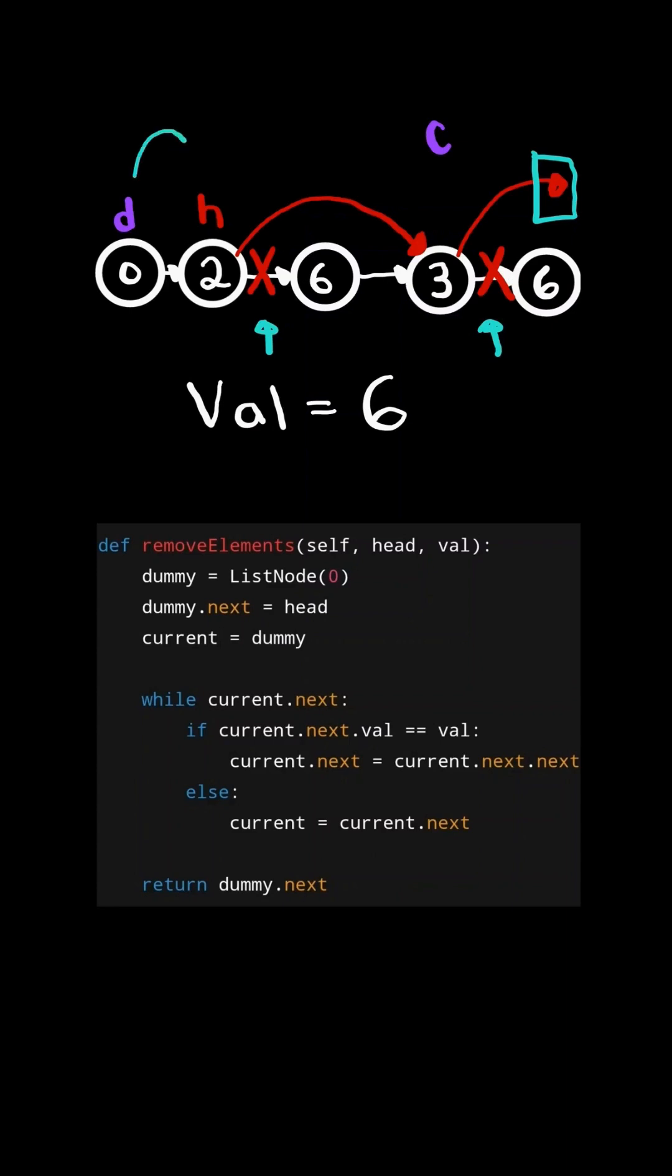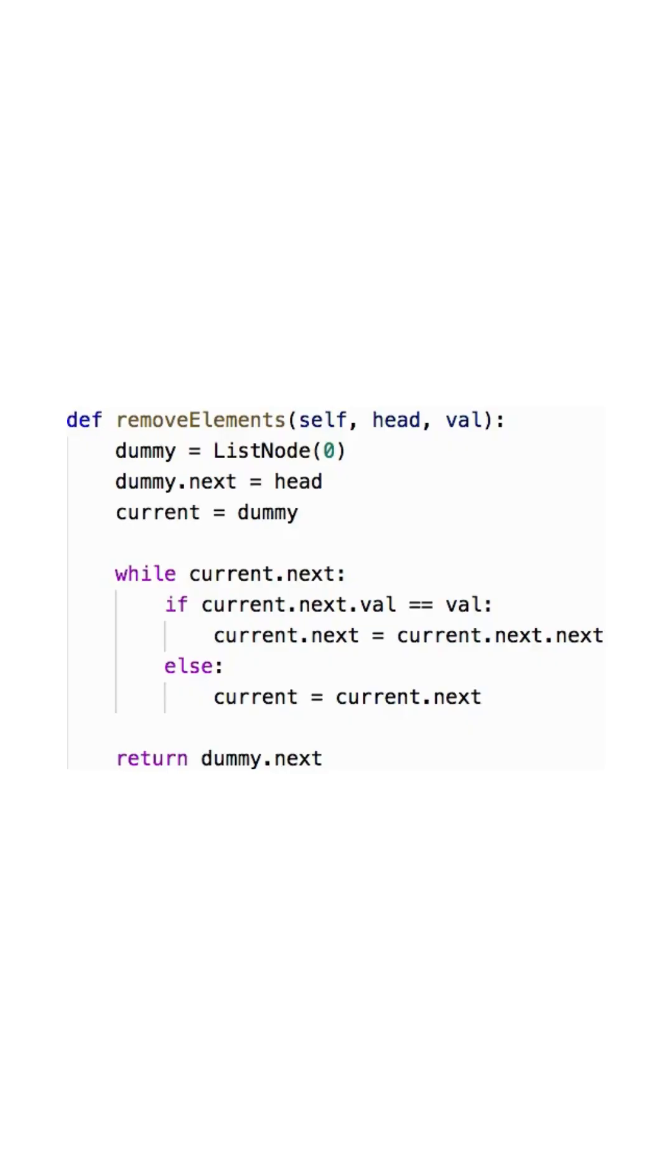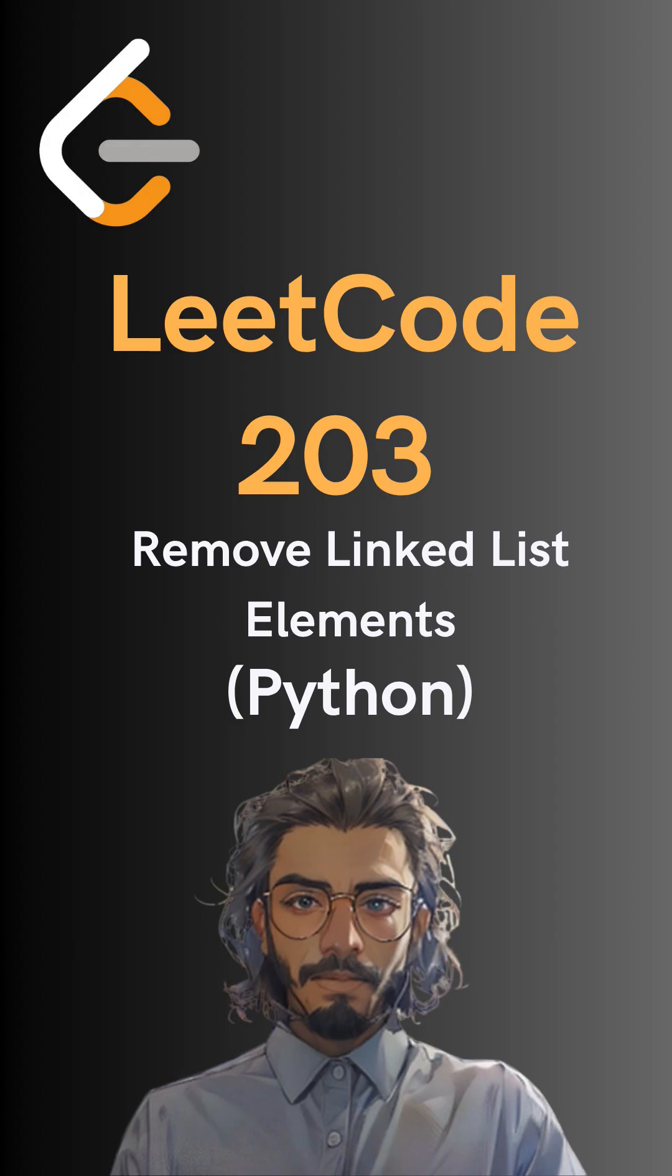And finally, we return the new head of the linked list, which is stored in dummy.next. And here's the code to do so. Please like and follow for more.